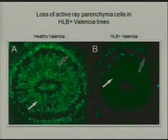We also see a lot of active tissue on the outside — this is the area where active cambium development occurs and new phloem is developing. We just don't see that same activity in the trees with HLB.